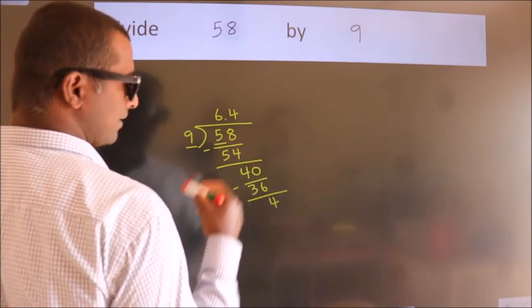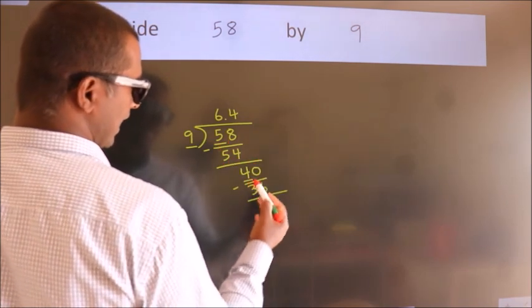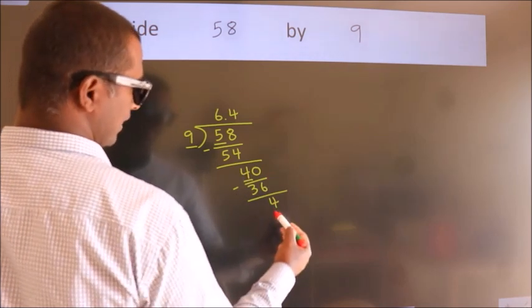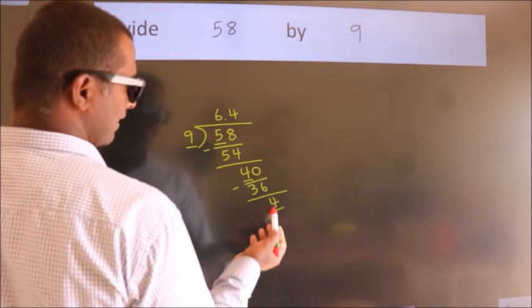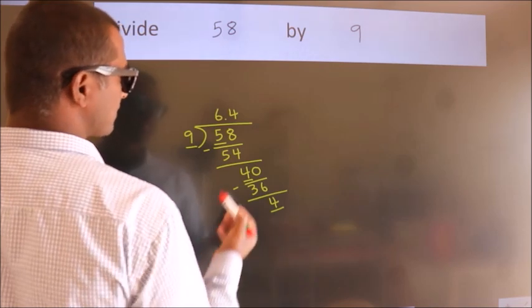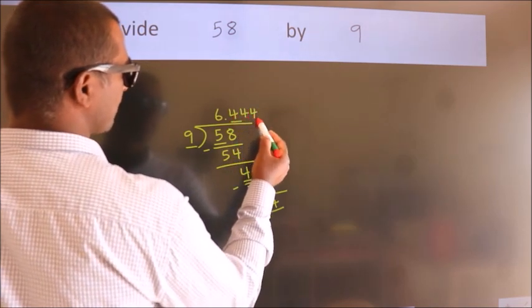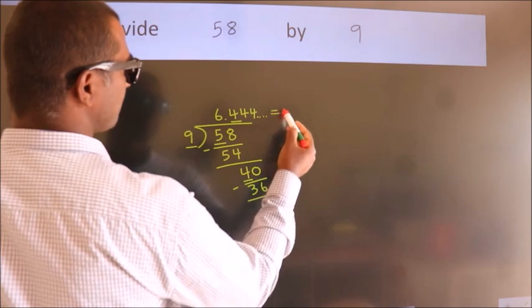Now you observe, we had 4 here and we got 4 again. That means this number keep on repeating. So this is our conclusion.